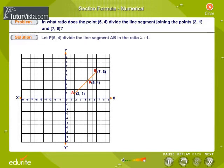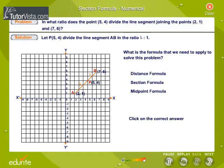Solution: Let P(5,4) divide the line segment AB in the ratio lambda is to 1. What is the formula that we need to apply to solve this problem? Click on the correct answer.